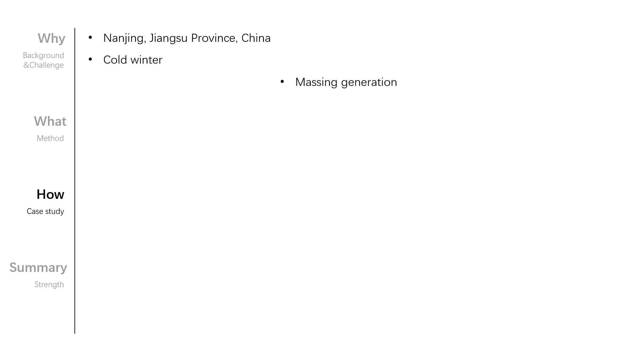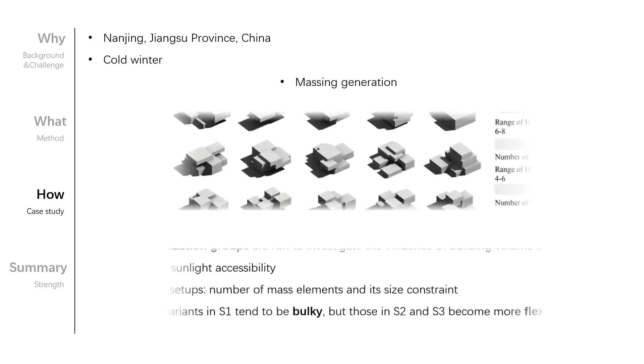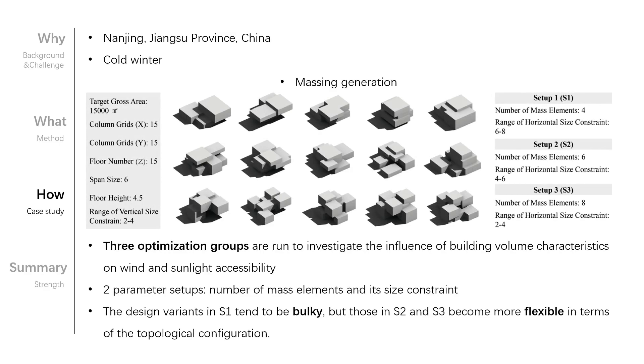First is the massing generation. Three optimization groups are run to investigate the influence of building volume characteristics on wind and sunlight accessibility. For each set of design, we differentiated the formal features by the parameter setup, including the number of mass elements and its size constraints. And it can be noticed that the design variants in S1 tend to be bulky, but those in S2 and S3 become more flexible in terms of the topological configuration.